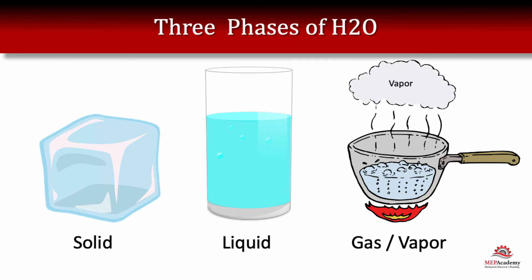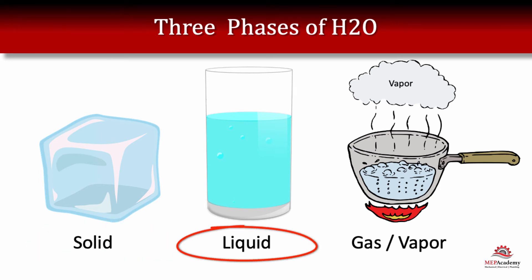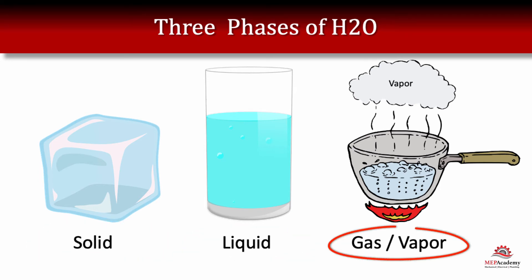One more simple explanation about physics before we move on, and that is the phases of refrigerant. You're familiar with water — water has three phases: the solid phase, which is ice; the liquid phase, which is water; and the gas phase, which is vapor.